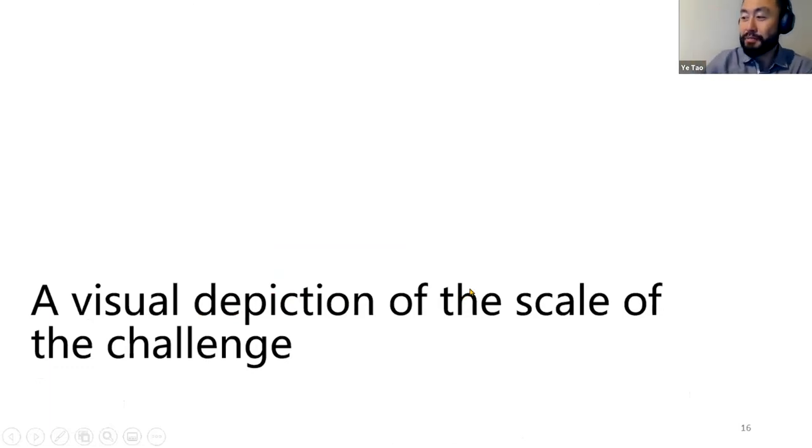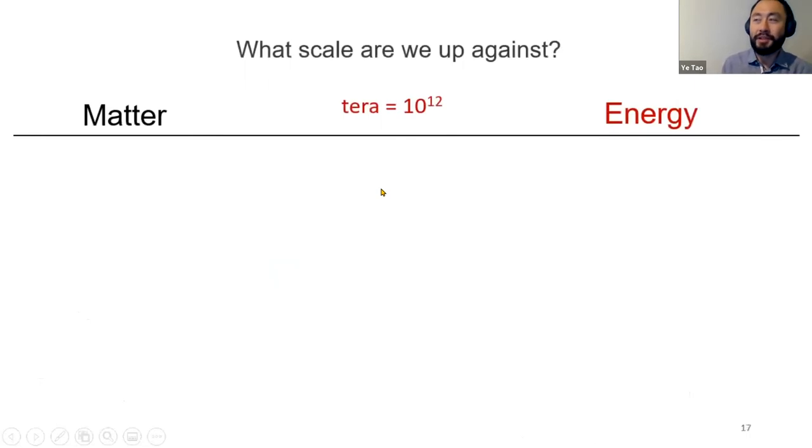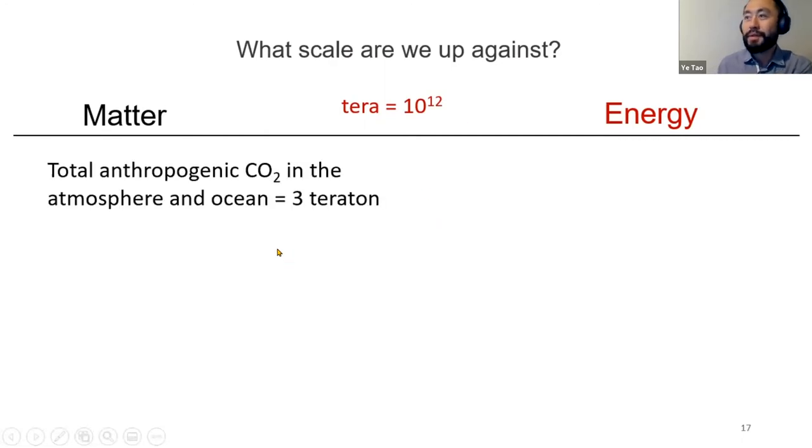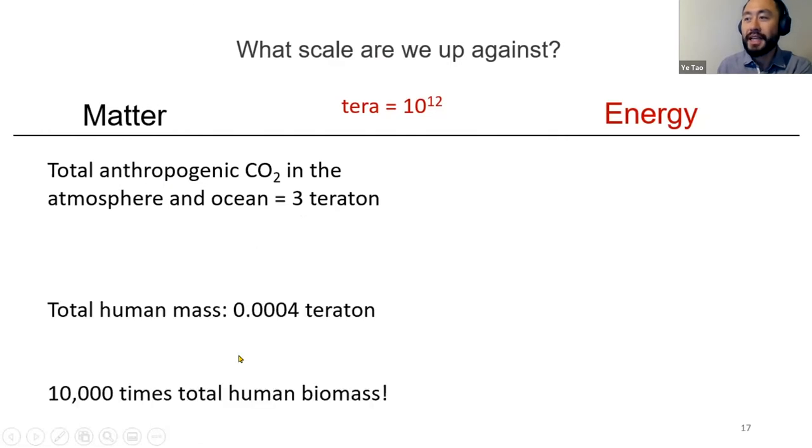It's nice to appreciate what we're up against in some diagrammatic depiction. First of all, let's put some numbers on the problem from both the material quality perspective and an energy or power magnitude perspective. It's useful to use large units—terra is 10 to the 12th. We have an excess of about three teratons of CO2 equivalent in the atmosphere and oceans—that's roughly 10,000 times human biomass.